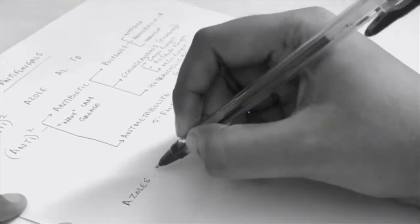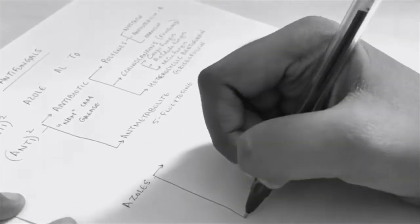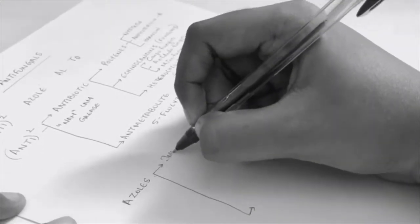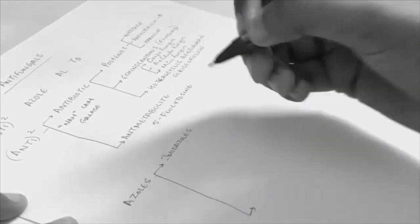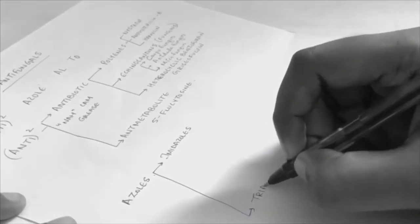The next classification is azoles. Azoles can be classified into two: imidazoles and triazoles.